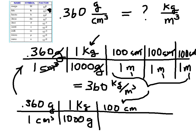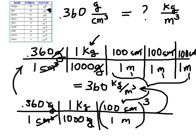100 centimeters is equal to 1 meter, and I'm going to cube the whole conversion factor. By doing that, I have to cube everything inside the parentheses: the 100 gets cubed, the centimeters get cubed, the 1 gets cubed, and the meters get cubed. So when I check units, grams cancel grams, centimeters cubed cancel centimeters cubed, and I'm left with units of kilograms per meter cubed. The answer is the same: 360 kilograms per meter cubed.